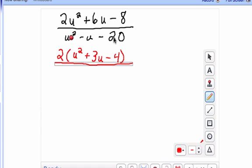Now we look down here at the denominator and can't common factor anything out of those terms, so they just stay u-squared minus u minus 20. And now we look at both of these values and we see if we can factor those.